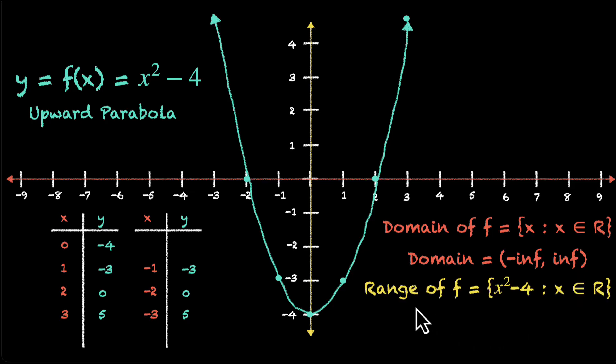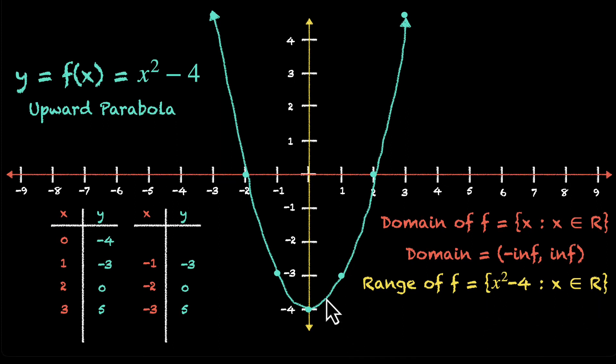There are two ways to write the range. One is a formal way. Range of f is x square minus 4. This is just its definition where x belongs to R. This is us saying, you figure out the range. We're not going to do that. But if we look at the graph, this is what we can say. The range is from minus 4 to infinity where minus 4 is included. This is a square bracket. So we'll take all values from minus 4 up to positive infinity. So now we know what a polynomial function is, what its formal definition is, how to graph them, and using the graph, how to figure out their domain and range.